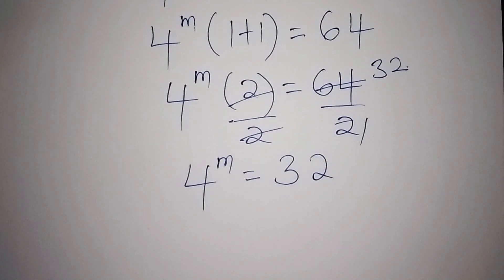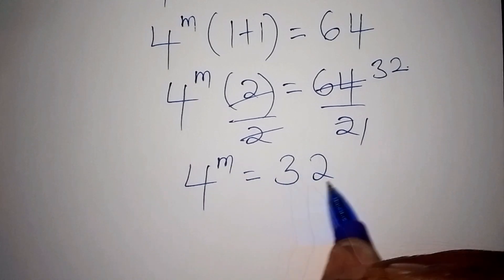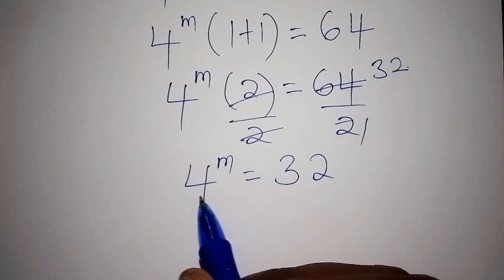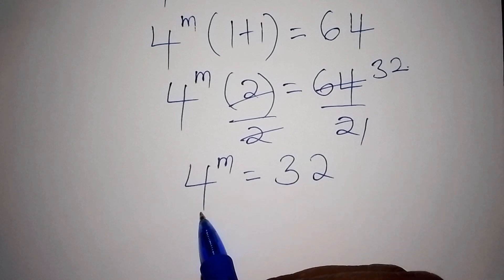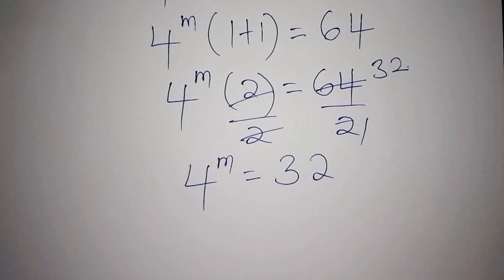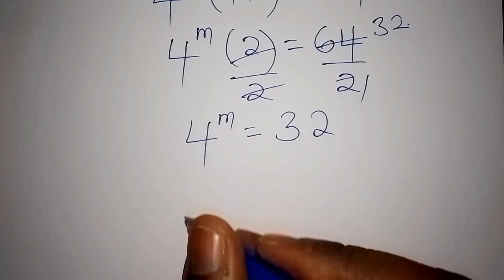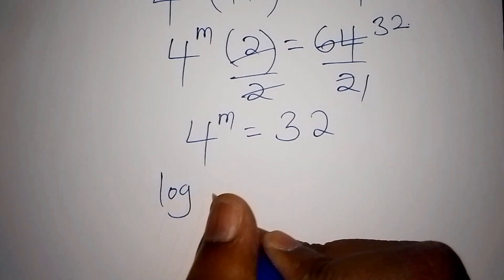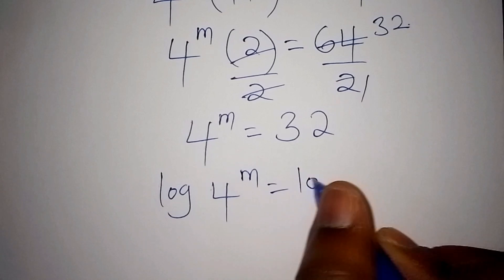So how do we go about it? 4 is the base, m is the index, and 32 is a whole number. It is difficult for us to express 32 to the base of 4, so we shall introduce the log on both sides. We shall have log of 4 to the power of m equals log of 32.